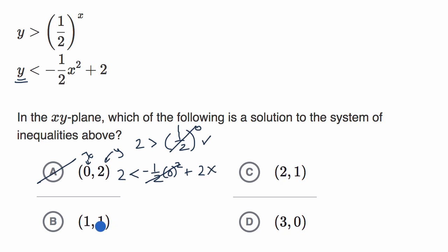Now let's look at this choice. When x is one and y is one, does that meet these two constraints? Well, let's see. Is it true that y being one is greater than one half to the x power, and in this case, x is one? Well, one half to the first power is just one half. So this is true. One is greater than one half, so it meets that constraint.